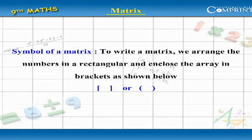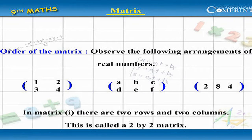To write a matrix, we arrange the numbers in a rectangular array and enclose the array in brackets — i.e., square brackets or small brackets.